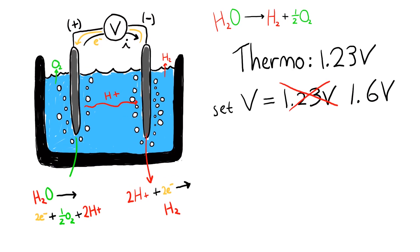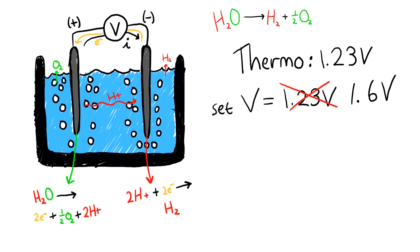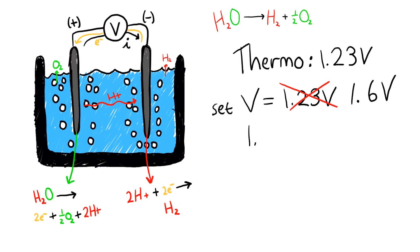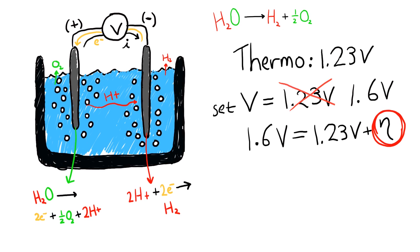You might remember Ohm's law, which says that the electrical power is equal to the product of a voltage and a current. So this extra potential, the overpotential, means that we have to spend more energy than we would like to accomplish a task. Sound familiar?